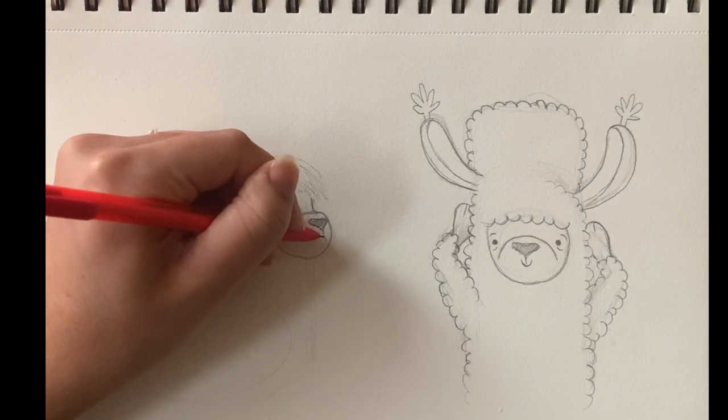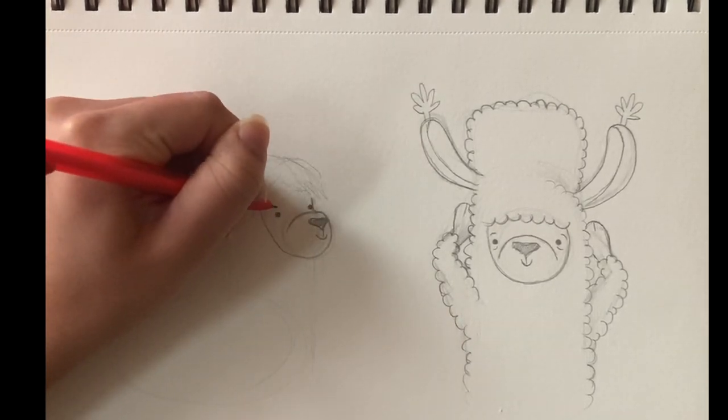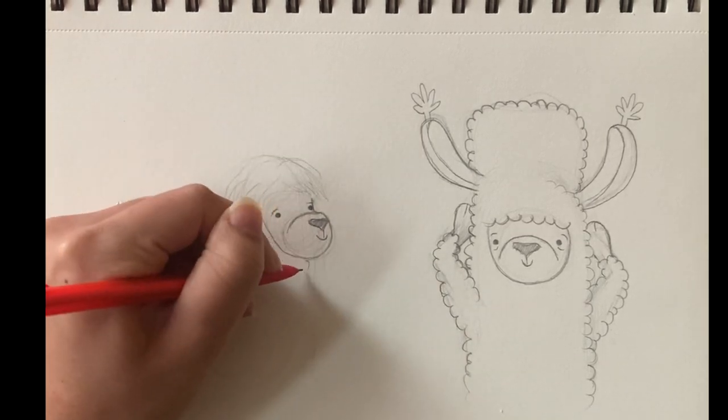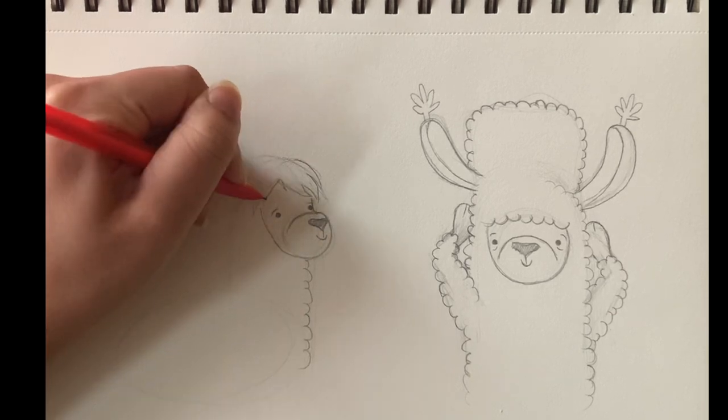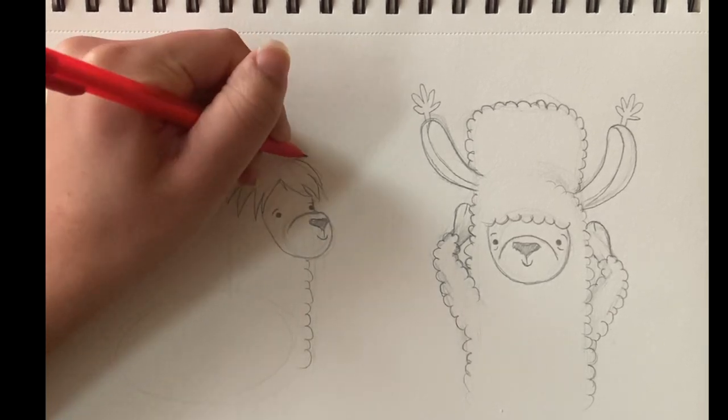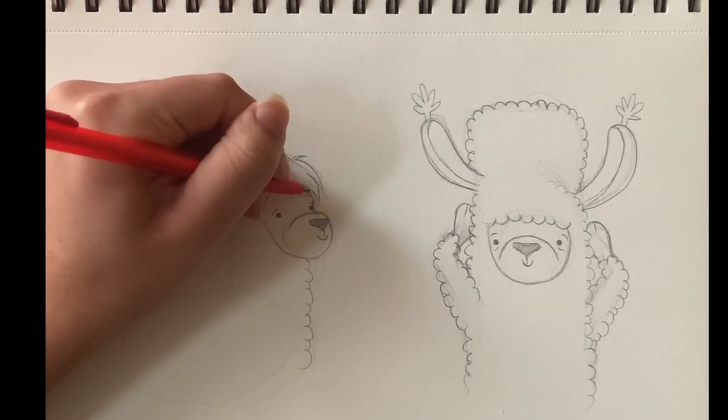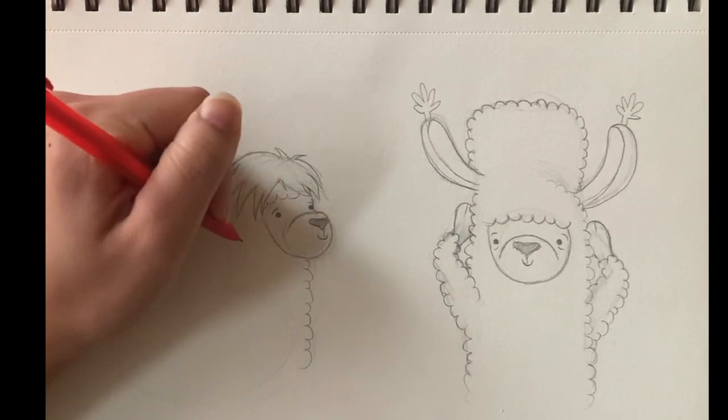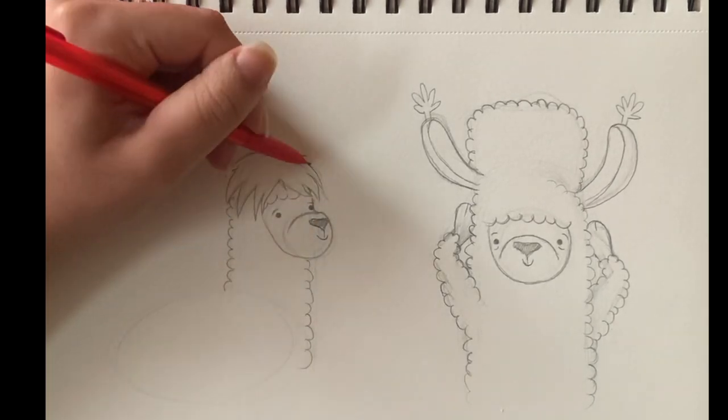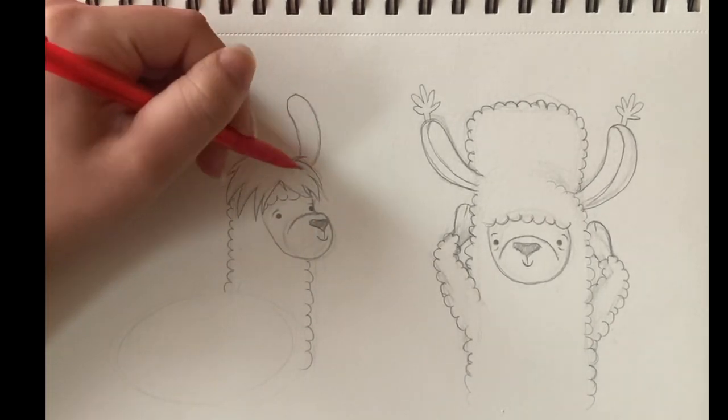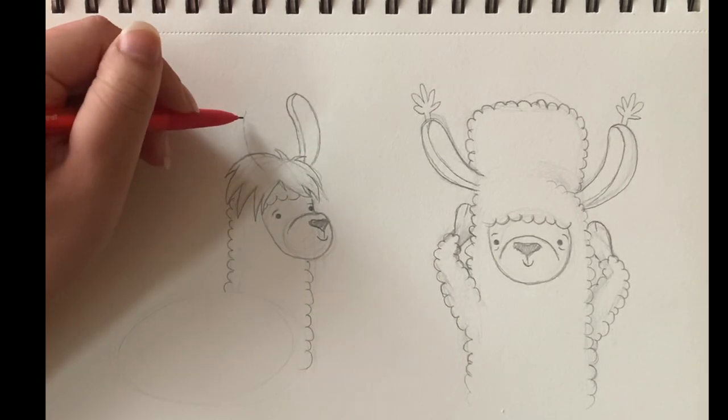I'm going to go ahead and put in his little eyes and the wrinkles. I only gave him top eye wrinkles this time. Now I'm just going in and fully sketching out his hairdo. I wanted his hair to be a little bit different—I wanted it to be a straight hairdo style so it would look a little different than our poofy haired llama on the other side. Right now I'm drawing out his ears sticking out from his little hairdo.